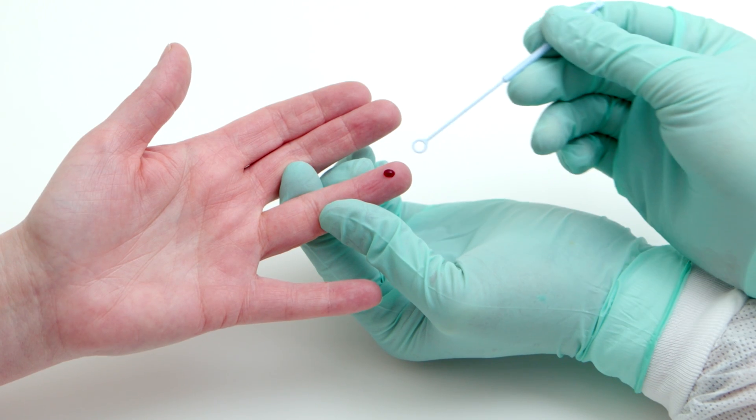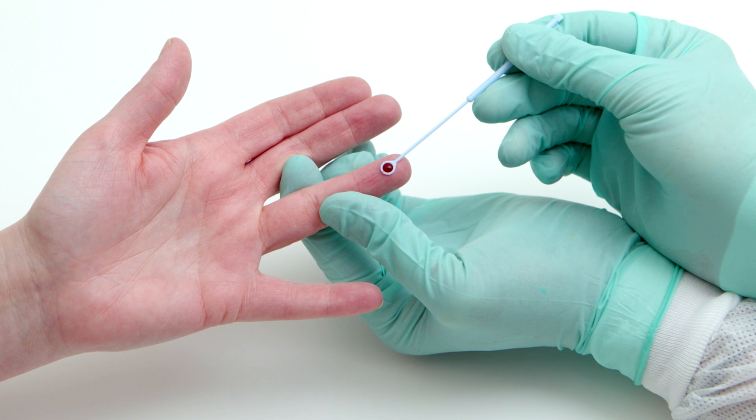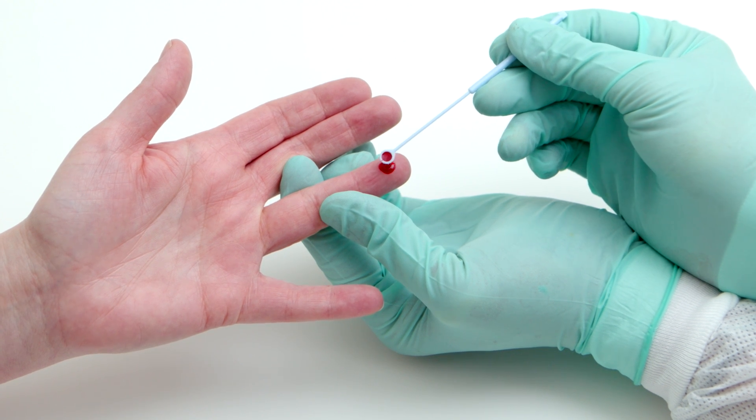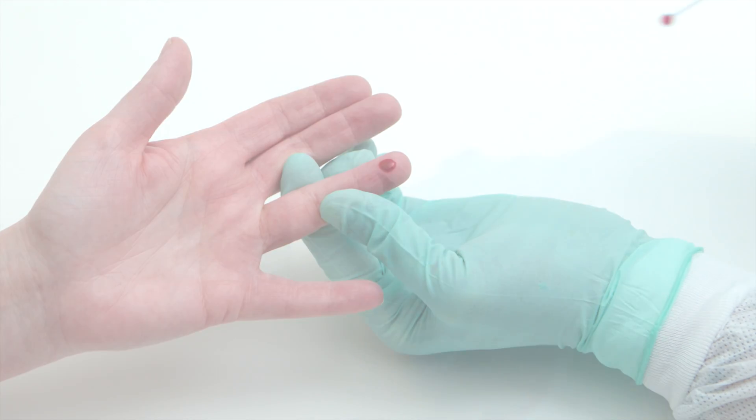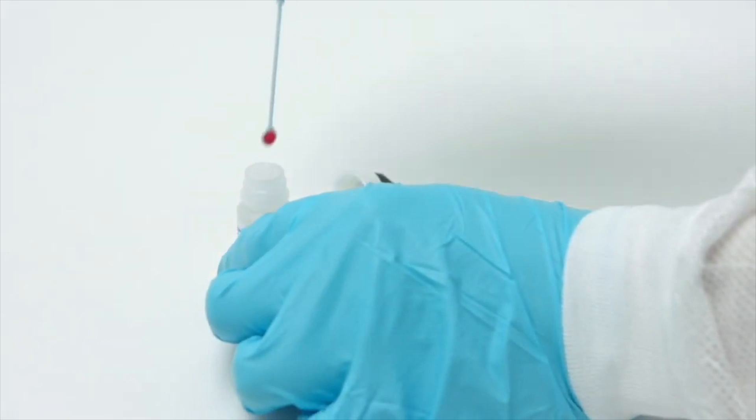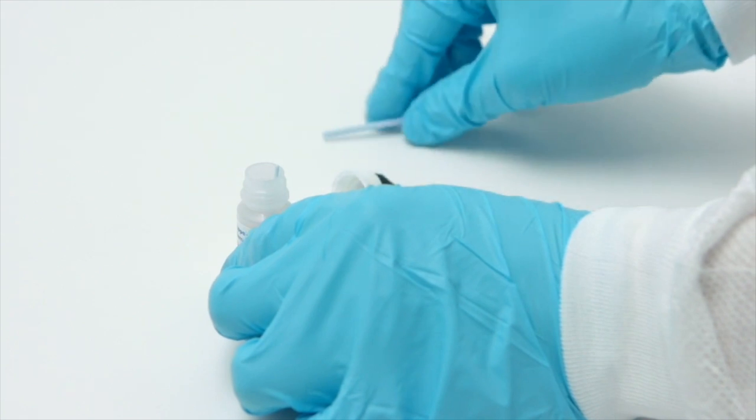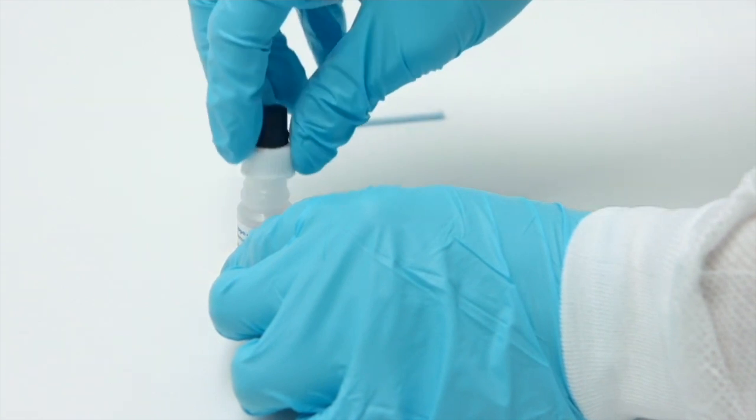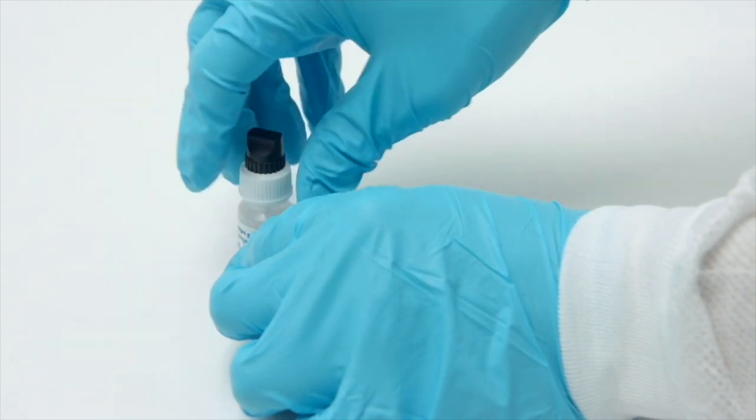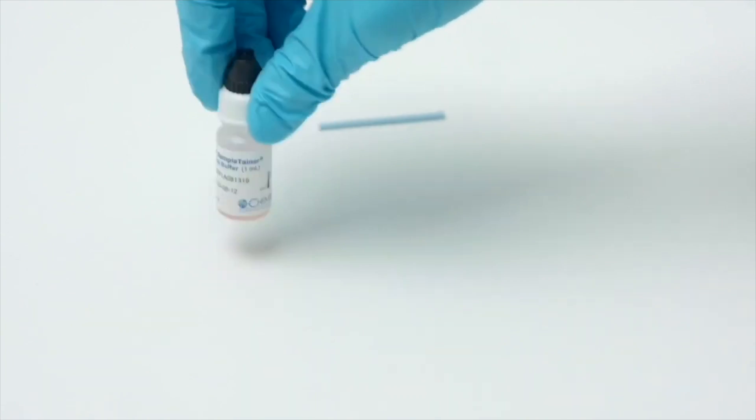Collect the sample from the second drop of blood with a provided 10 microliter sample loop. Insert the sample loop into the DPP sample tainer such that the loop is touching the bottom of the bottle. Snap and twist the shaft at the brake notch to dislodge the loop into the sample tainer. Replace the DPP sample tainer cap and shake for 10 seconds.